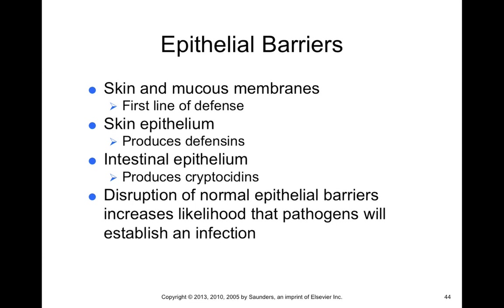Part of our immune defense relates to epithelial barriers. Even before immune cells start fighting off foreign debris or microorganisms, your skin and mucous membranes act as a first line of defense. The skin epithelium produces molecules called defensins, which can punch holes in bacterial membranes, and skin is also a tough, protective barrier so bacteria can't wiggle through between skin cells.